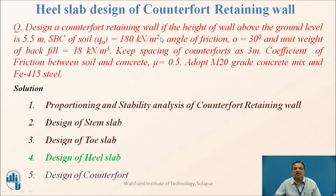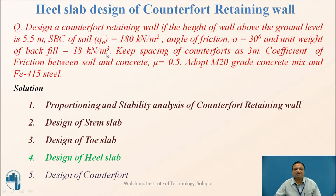Design a counterfoot retaining wall where the height of the wall above ground level is 5.5 meters. If the height of the embankment is more than 5 meters, the cantilever retaining wall is uneconomical and we have to go for the counterfoot retaining wall. SBC of soil is 180 kN/m², angle of internal friction is 30°, unit weight of backfill is 18 kN/m³, spacing of counterforts is 3 meters, coefficient of friction between soil and concrete is 0.5. Adopt M20 grade concrete and Fe415 steel.